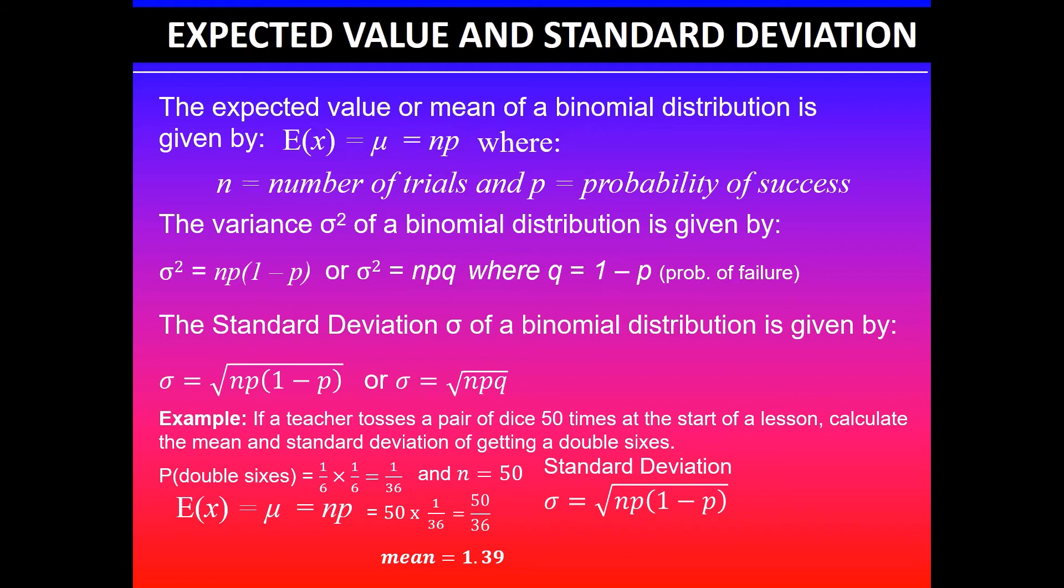To find the standard deviation, we know σ = √(np(1-p)), where 1-p is probability of failure. So we substitute the information: σ = √(50 × 1/36 × 35/36), because if 1/36 is probability of success, then 35/36 will be probability of failure. Taking the square root of that gives you σ = 1.162. So the mean value is 1.39 and the standard deviation is 1.162.